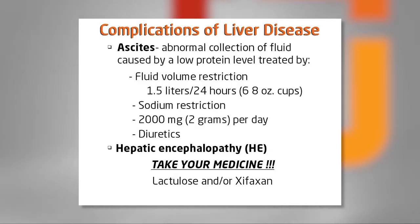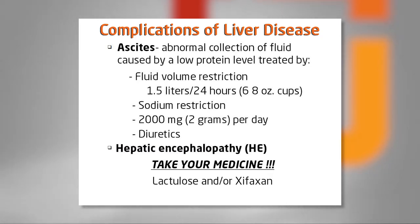There are three main complications of liver disease. The first one is called ascites — an abnormal fluid collection usually in your abdomen, but sometimes it can be everywhere. We've had people gain as much as 100 pounds in this kind of fluid accumulation. It's caused by a lack of a certain protein that helps mobilize fluid so it goes into your circulating system and is filtered out through your kidneys as urine. We manage this complication in three ways.